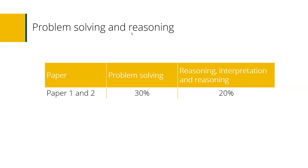For the problem solving weighting in 4MB1, both Paper 1 and Paper 2 have 30% problem solving, compared to 20% for the other specification. With Specification A you have the choice to go for foundation where the weights are slightly less. This goes back to knowing your students and what's the best fit, depending on the centre and the students you have.